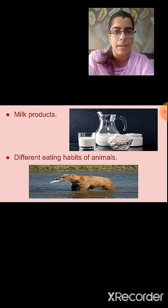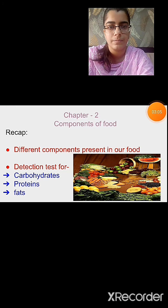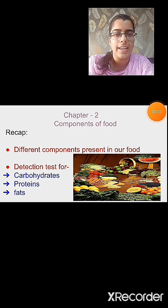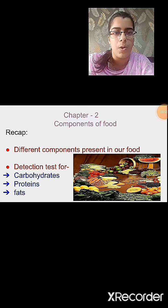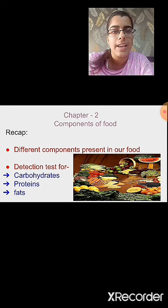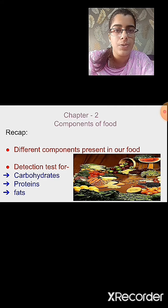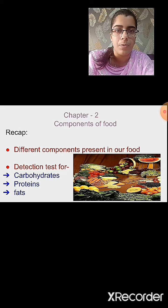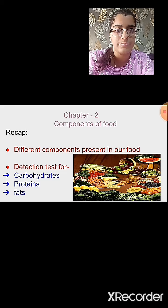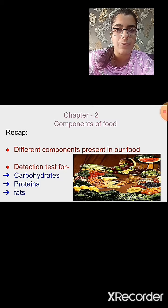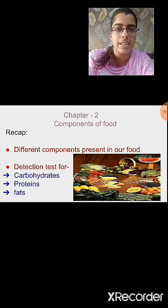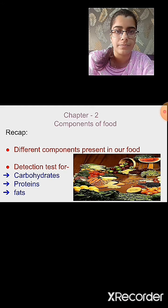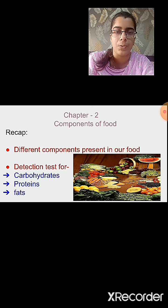I hope chapter number 1 is clear to you. Then we studied chapter number 2: Components of Food. We consume a variety of food, and our food consists of different components. The different components present in our food are carbohydrates, proteins, fats, vitamins and minerals, along with roughage and water. These components of food are known as nutrients.